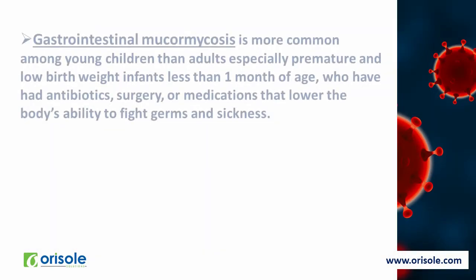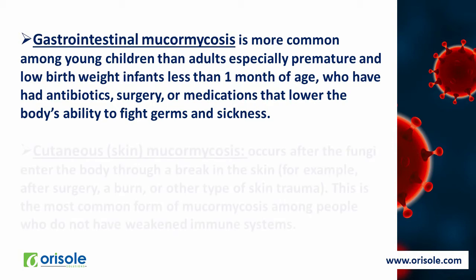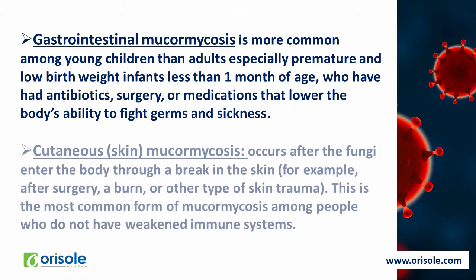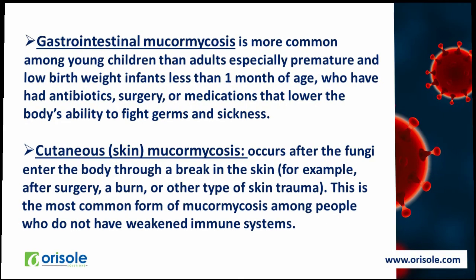Gastrointestinal mucormycosis is more common among young children than adults, especially premature and low birth weight infants of age less than one month who have had antibiotics, surgery or medications that lower the body's immune system. Cutaneous or skin mucormycosis occurs after the fungi enter the body through a break in the skin, for example after surgery, burn or other types of skin trauma. This is the most common form of mucormycosis among people who have weakened immune systems.